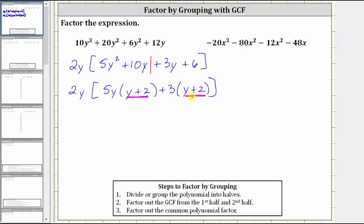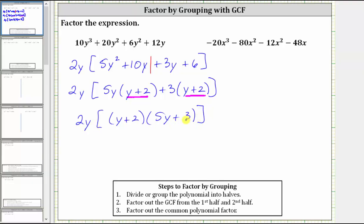Now we factor out y plus 2 from these two products. We still have the factor of 2y, and factoring out y plus 2 from both products gives us the quantity y plus 2. The remaining factor is 5y plus 3. This is now factored completely, and we can drop the brackets and write the final factored form as 2y times the quantity y plus 2 times the quantity 5y plus 3.